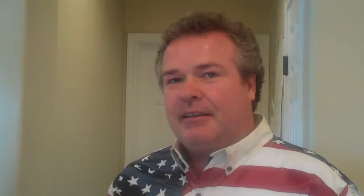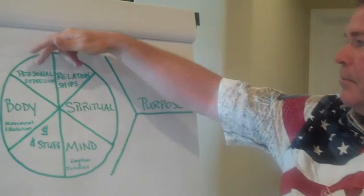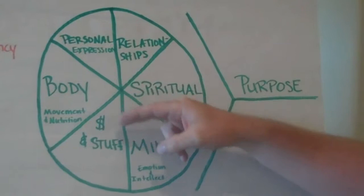Before we get started, we're going to be extracting thoughts from the subconscious using a rant in about two-minute segments. The two-minute segments we'll use on each item: personal expression, relationship, spiritual, mind, emotion, and intellect, your dollars, your stuff, your body, your movement, nutrition. It should flow into your purpose.